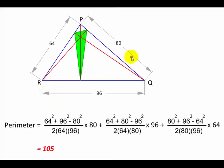So, in words, the perimeter of orthic triangle is the sum of all three sides multiplied by the cosine of angle opposite to them. And here is the numerical data that we had. The length of the wings were 96, 80 and 64. When we substitute these angles, we get the cosines and the final perimeter turns out to be 105 units.